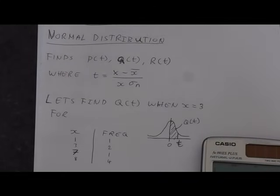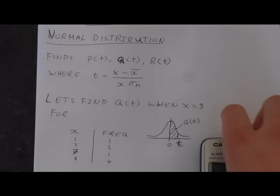To teach you how to do this on the calculator, we'll just jump straight into an example, and we're going to find Q of t when X equals 3. If you're interested, what Q of t actually is,